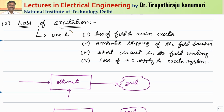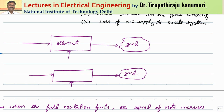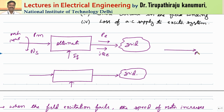The next problem is loss of excitation. Loss of excitation can happen due to loss of field to the main exciter, accidental tripping of the field breaker, short circuit in the field winding, or loss of AC supply to the exciter system. Normally, the mechanical power rotates the alternator at speed NS, the field supply IF is there, and the alternator supplies both active and reactive electrical power to the grid, acting as a generator. But if the field excitation fails, IF becomes equal to zero while the mechanical input remains the same.